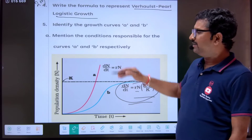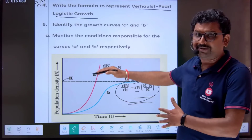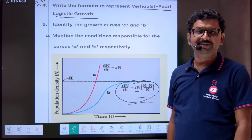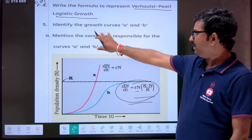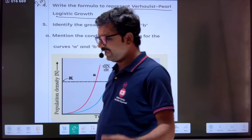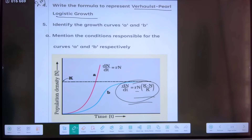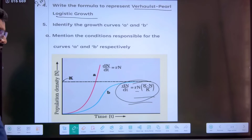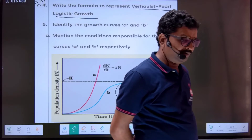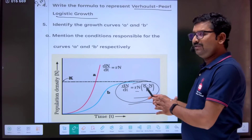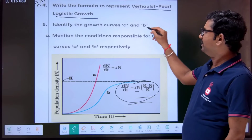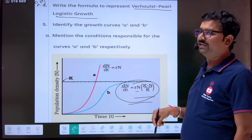A five-mark question might frame this by asking you to identify the growth curves — curve A and curve B, the pink line and the blue line — one being the exponential growth curve and the other the sigmoid growth curve. You have to answer accordingly.